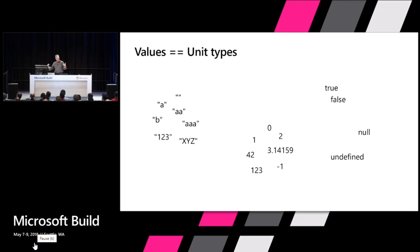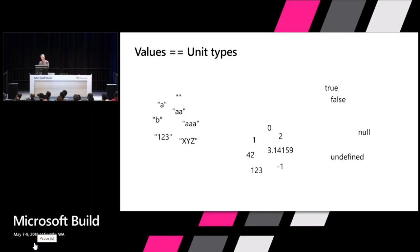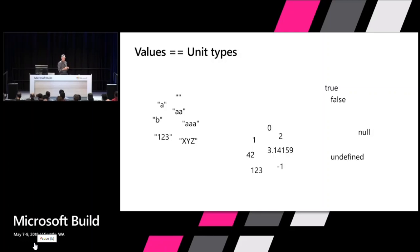JavaScript programs are all about producing values and writing logic that makes new values out of existing values. There are groups of values: strings, numbers, trues, falses. In TypeScript all of these values are also types — there's a type called 42 and it has one possible value, the value 42. These are called unit types and everything sort of comes from that.